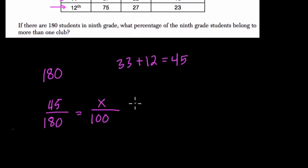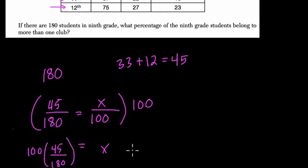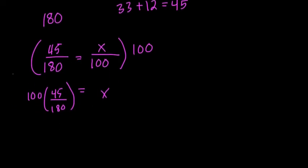There are lots of ways to do this. I think the easiest way is to multiply both sides by 100. X over 100 times 100 is X, and here we have 100 times 45 over 180. So we can do this on a calculator, but I'm going to try to have some fun with it and see how far we can break it down without a calculator.